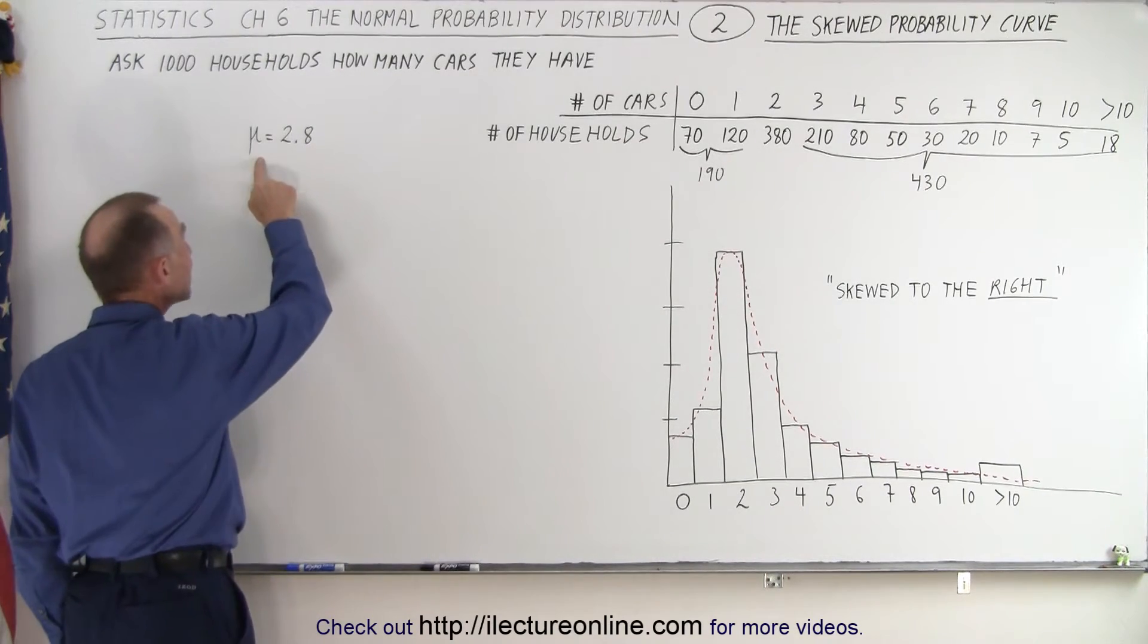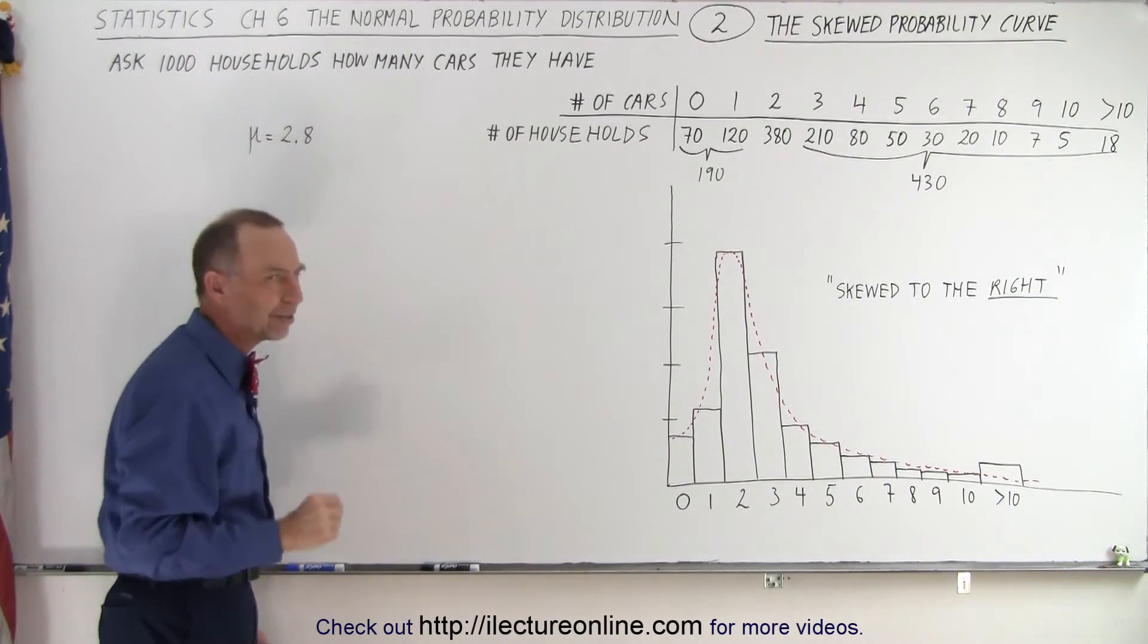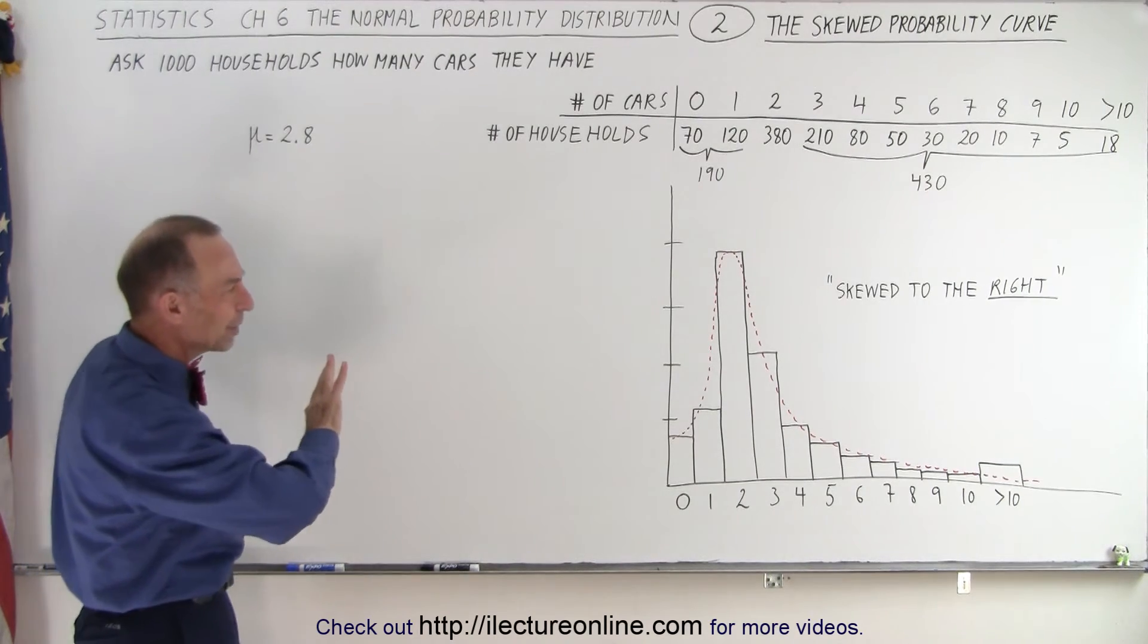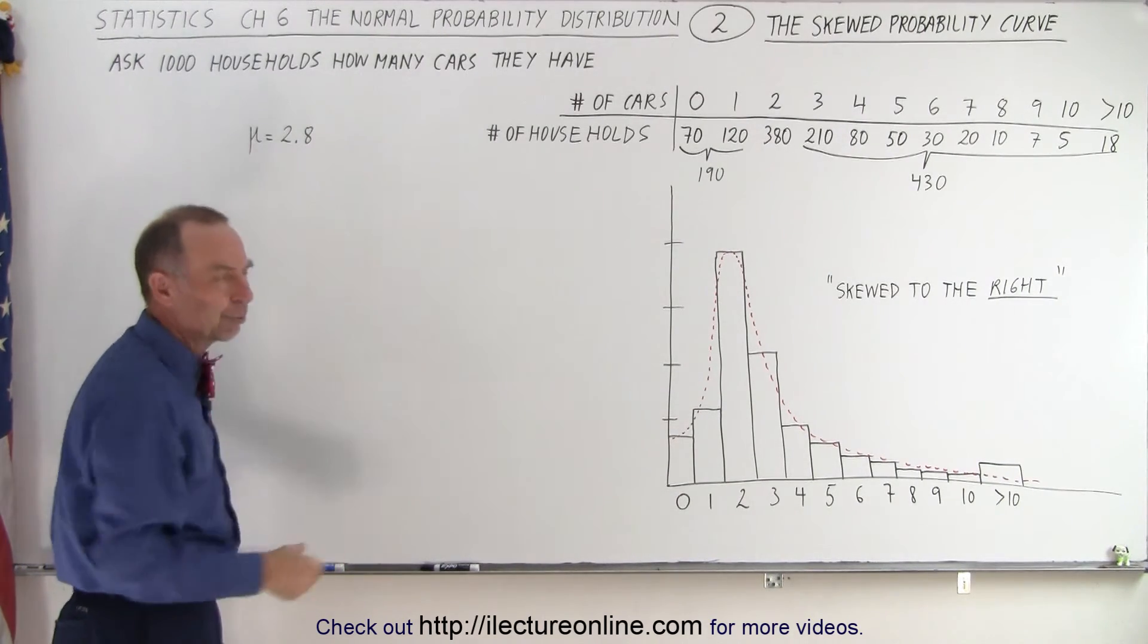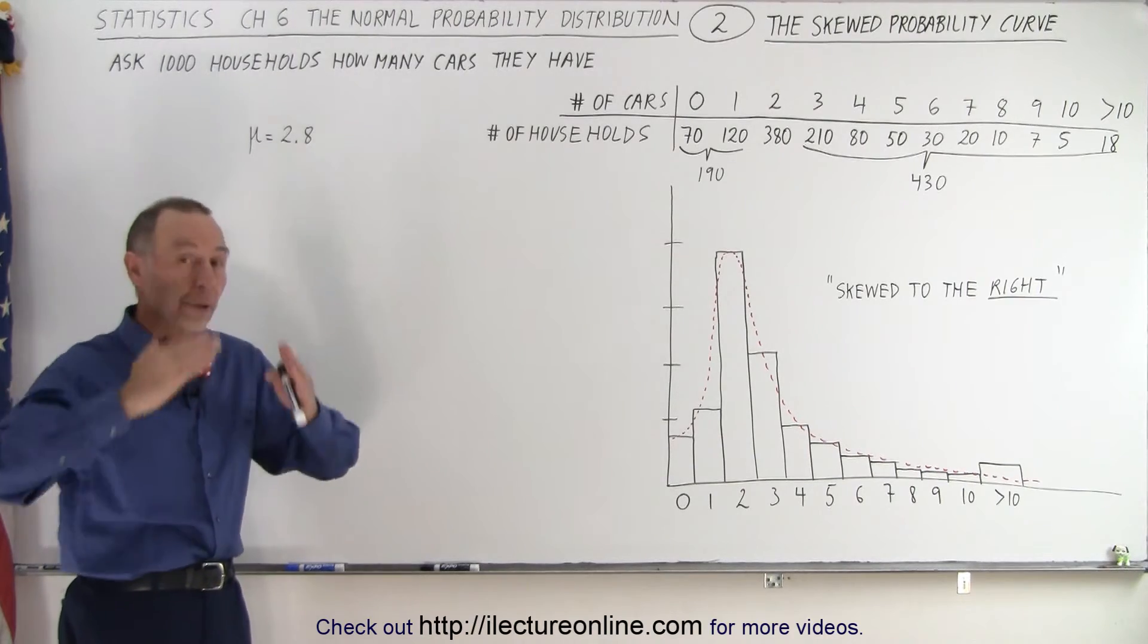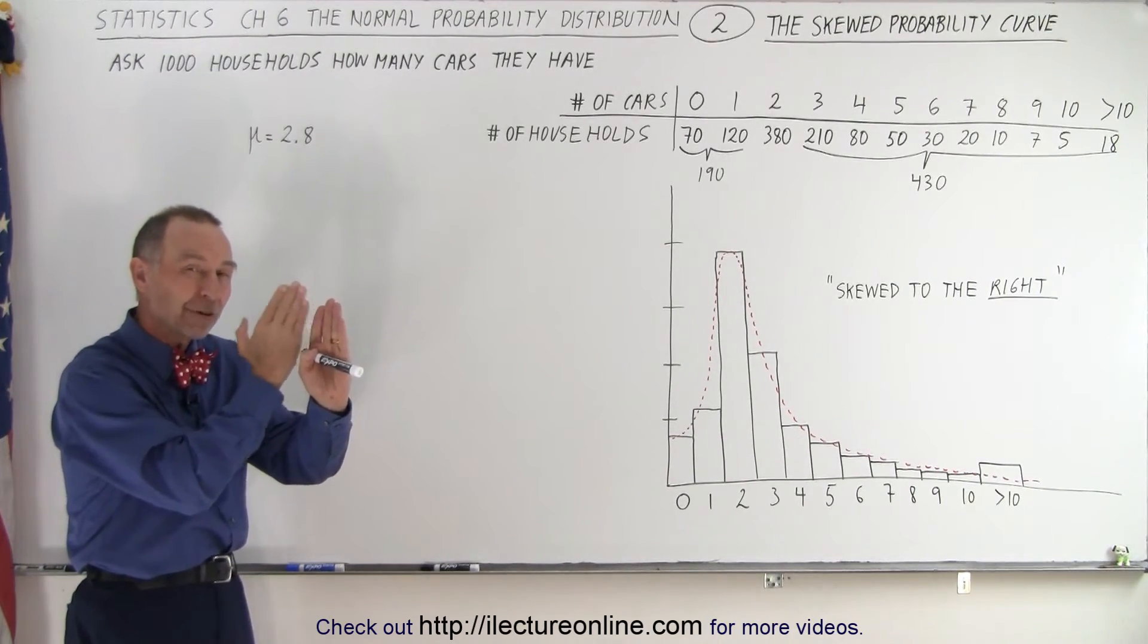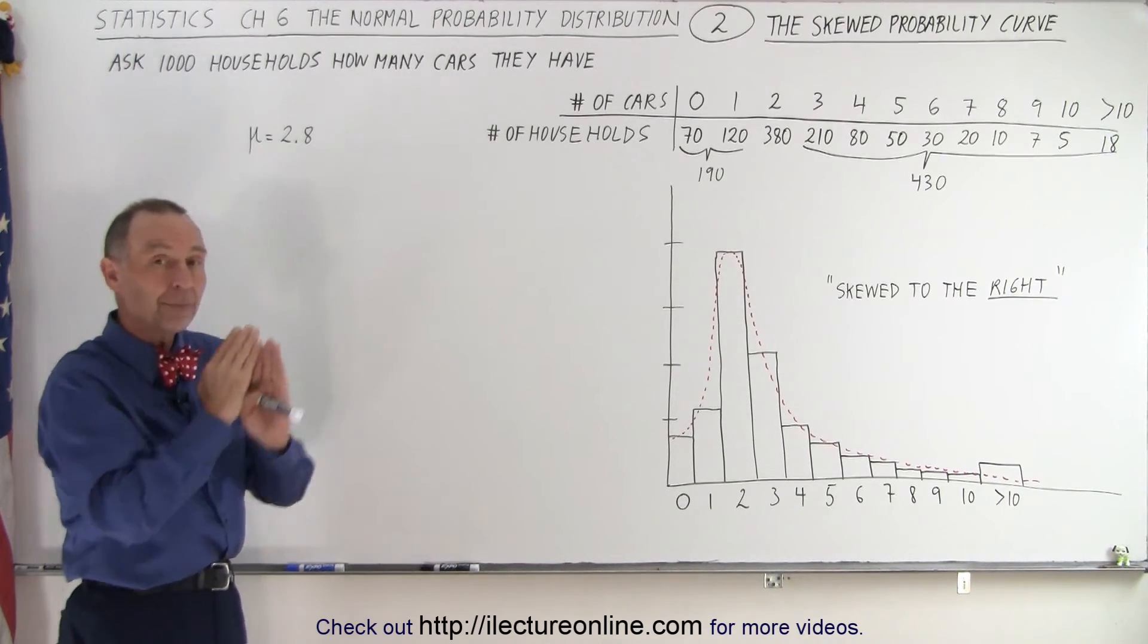And then notice that the mean of the distribution is 2.8. We'll show you later how to calculate that mean. So the mean is quite a bit to the right of the maximum probability. When there's a normal probability curve, the mean and the maximum probability end up being very close, or presumably right on top of one another.